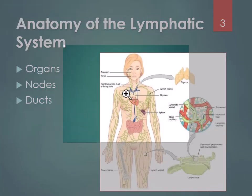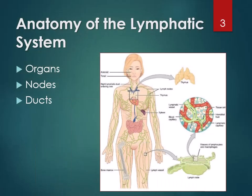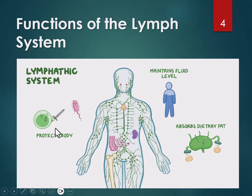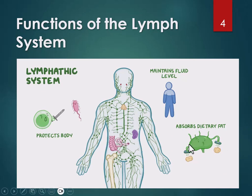When you talk about the functions of the lymph system, you have maintaining fluid level because it returns fluid to the cardiovascular system. Also, dietary fat from the digestive system goes through the lymph to get to the blood rather than going directly from your digestive tract into the blood. We'll talk about dietary fat more when we get to the digestive system. But the main function of the lymph system is protecting the body. You can see the nodes — the green dots in this figure — as the lymph moves through until it dumps into the blood.